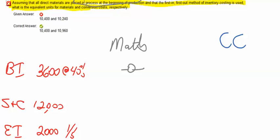With regard to those units that were started and completed, we have to take the completed units and subtract what was in beginning inventory. So, I'm going to take 12,000 minus 3,600 and find the difference, and that's going to be 8,400 units.